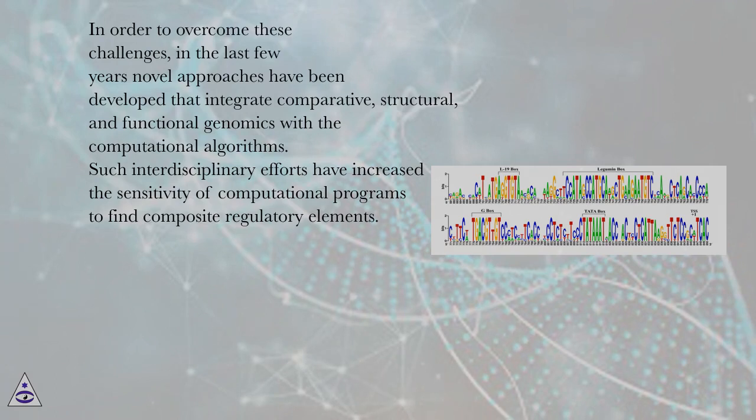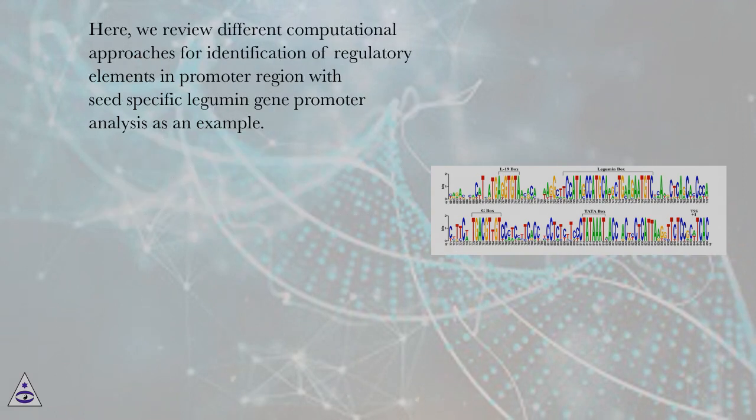Such interdisciplinary efforts have increased the sensitivity of computational programs to find composite regulatory elements. Here, we review different computational approaches for identification of regulatory elements in promoter regions, with seed-specific legume gene promoter analysis as an example. Based on the type of DNA sequence information, motif-finding algorithms are classified into three major classes: 1. Methods that use promoter sequences from co-regulated genes from a single genome. 2. Methods that use orthologous promoter sequences of a single gene from multiple species, also known as phylogenetic footprinting. And 3. Methods that use promoter sequences of co-regulated genes as well as phylogenetic footprinting (Dawson-Dye, 2007).